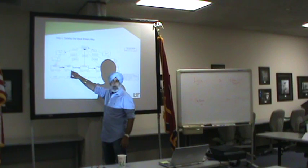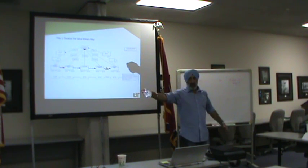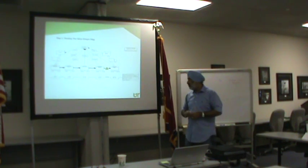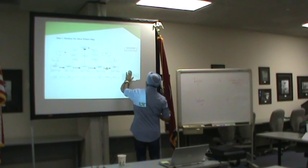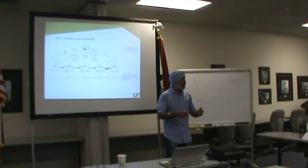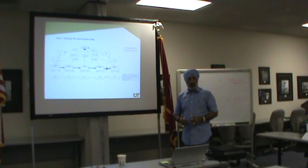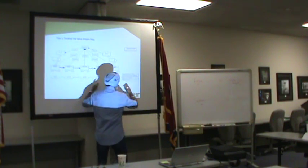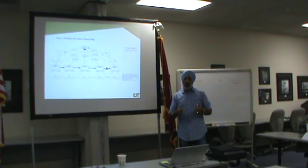What does a value stream map do for you? What is lean supposed to do for you? Reduce waste. We have three principles: reduce cycle time, reduce variation, and improve the quality of life. I look at these numbers and it does some calculations — it tells me the total value-added time over total process time, total non-value-added time over total process time. So it gives me a level of efficiency associated with that process, tells me what the cycle time is. But it's not so accurate. This is what you learned last week.